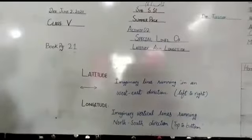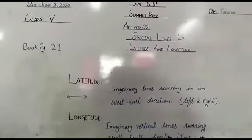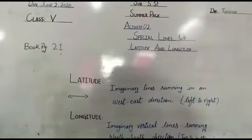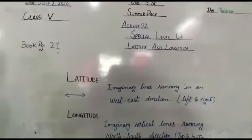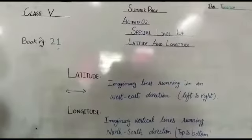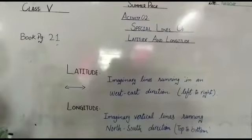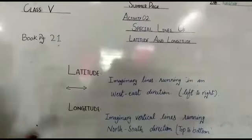And what is longitude? Longitude lines are imaginary vertical lines running in a north to south direction, which means top to bottom.